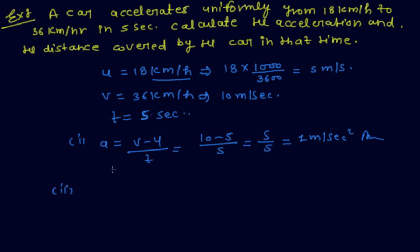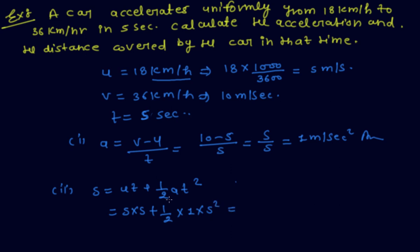Find the distance covered by the car in that time. Using the second equation of motion S equals UT plus half AT squared: S equals 5 times 5 plus half times 1 times 5 squared, which gives 37.5 meters. This is the second answer.